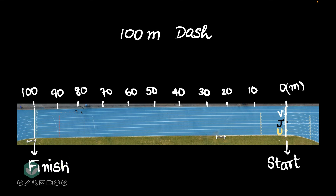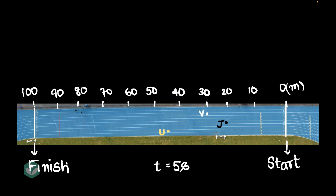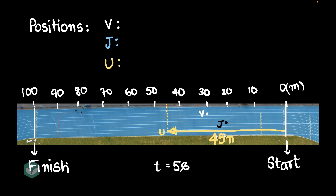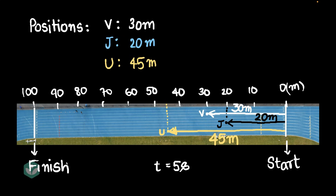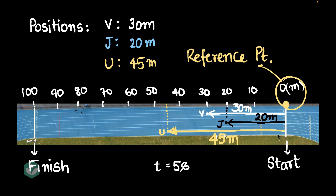Let me progress the story. At five seconds into the race, we've all run a little bit and Usain Bolt is clearly running very fast. To describe the positions of all of us: Usain has run about 45 meters, Joel has run about 20 meters, and Vibhor has run about 30 meters. Notice what's happening — I'm measuring the distances the runners have covered, and I'm measuring all those distances from one particular line, or point. That point becomes the reference point, and I'm measuring all distances from it.